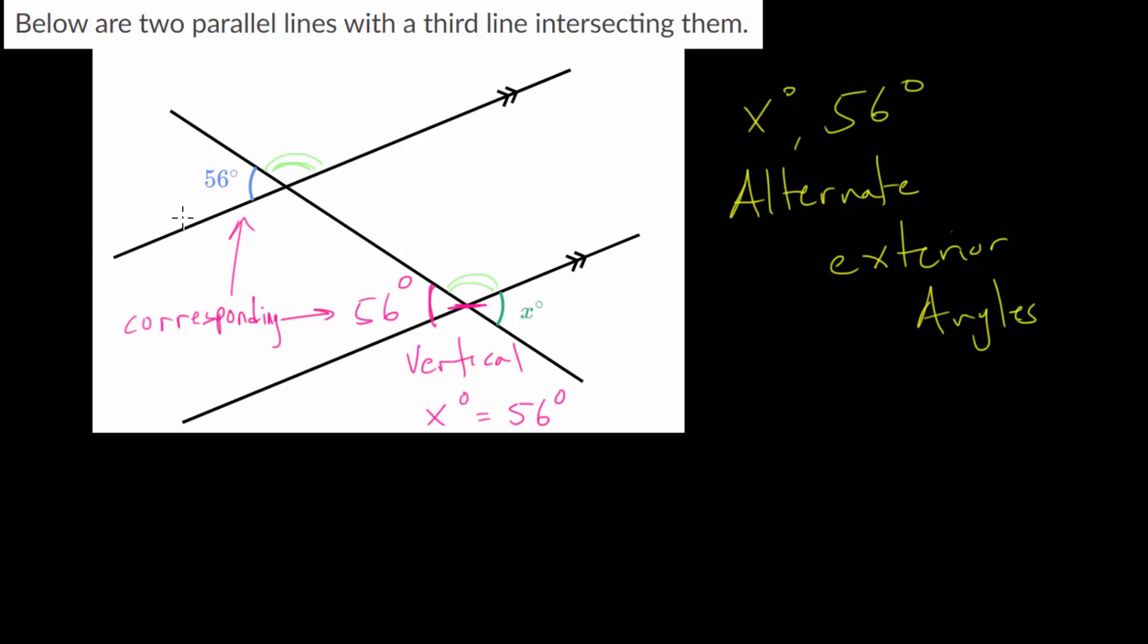For instance, if we were looking at, let's say, this angle right here, let me use a different color, we can call this angle this blue angle here. This angle here, since it's vertical, this is also 56 degrees. This is equal to this pink angle here, this 56 degree angle.